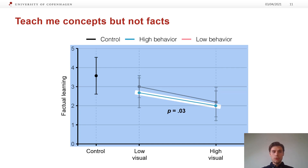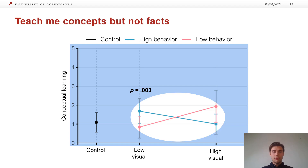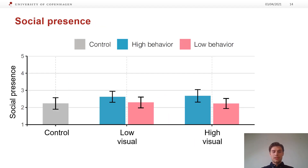This was not the case for conceptual learning, as can be seen on the next graph. Learning about concepts and theories was in some cases slightly better in the presence of a virtual instructor, although the difference was not very large. There was also a significant crossover interaction effect between appearance and behavior, meaning the effect of visual realism on conceptual learning reversed depending on the level of behavioral realism. Looking at the participants' experience of social presence, adding virtual people to the environment did not make that much of a difference — in general, the levels of social presence were low. Only participants who interacted with virtual instructors of high behavioral realism experienced slightly higher levels of social presence.